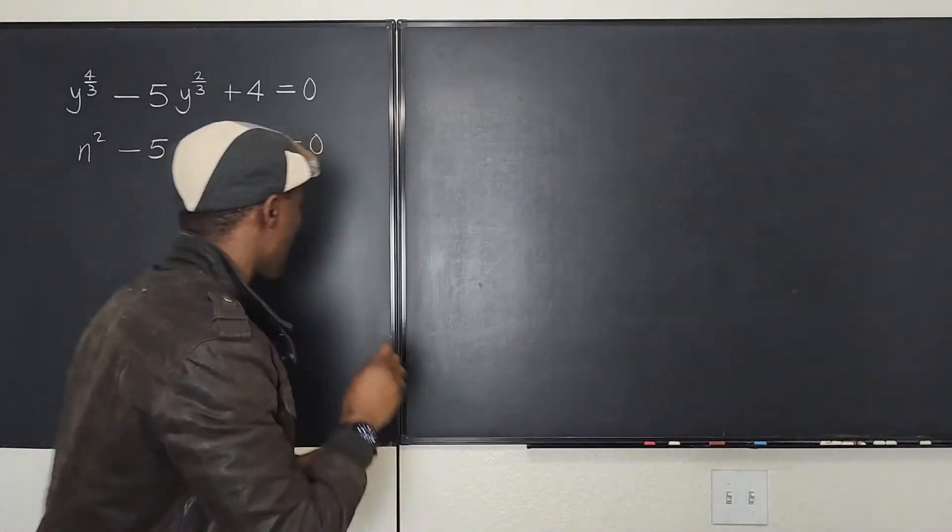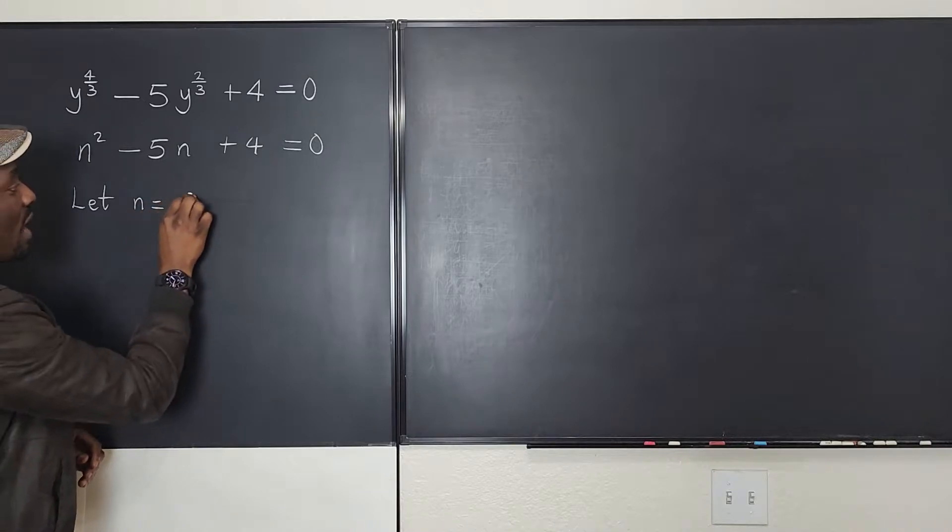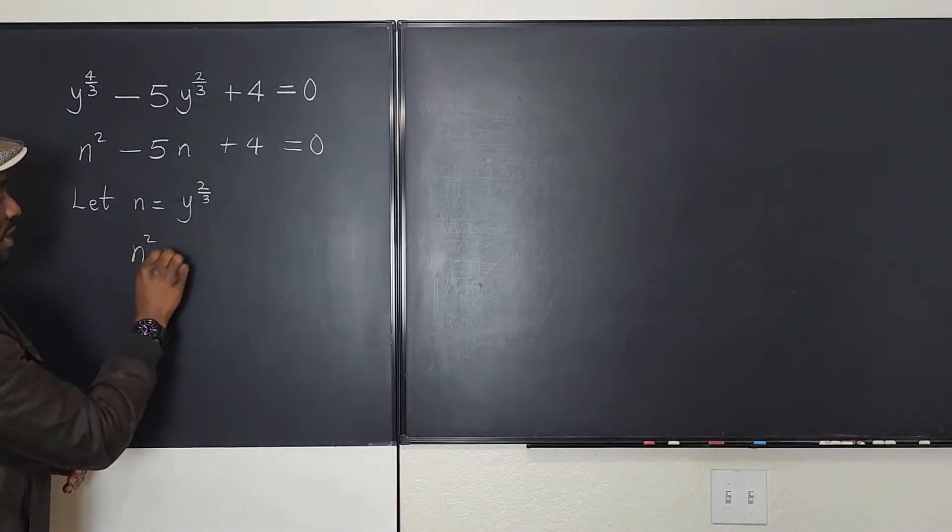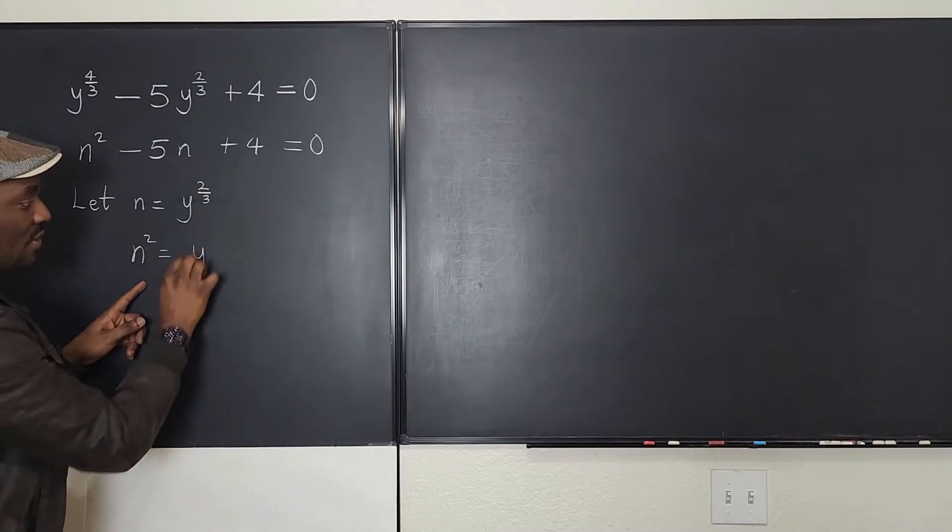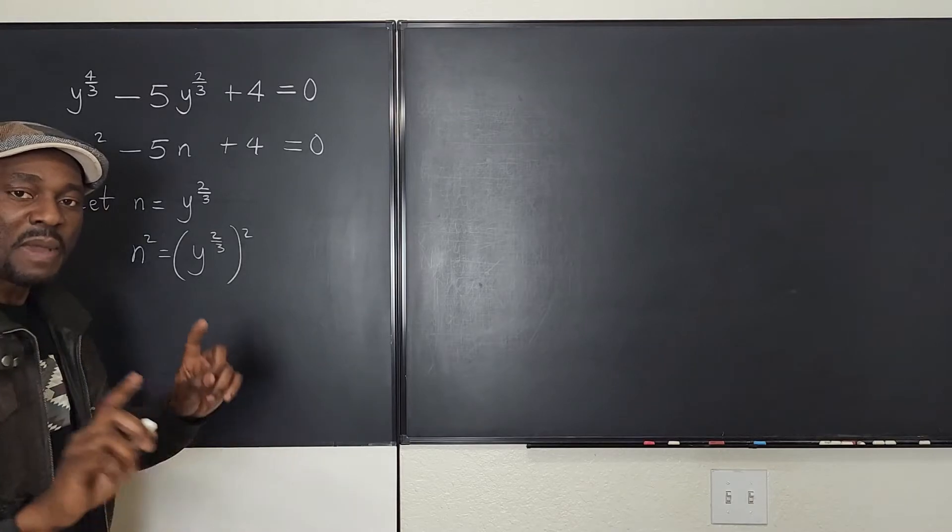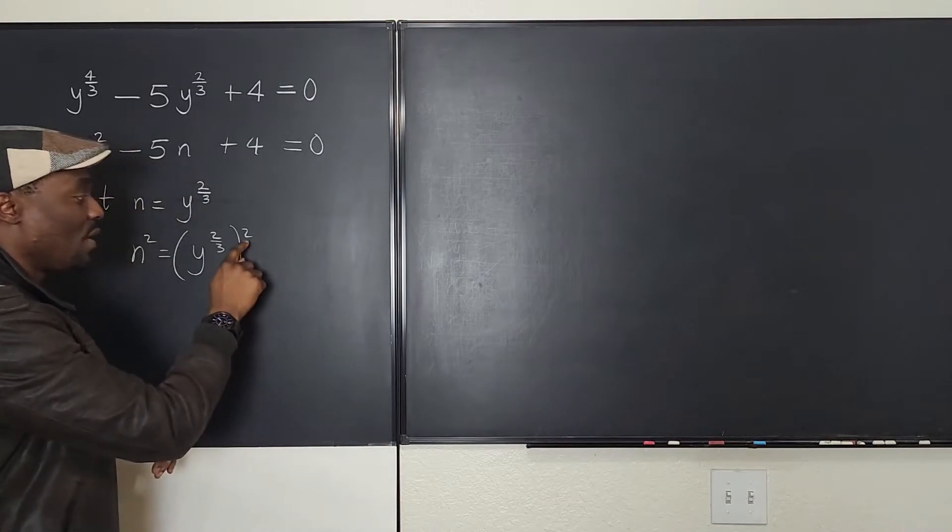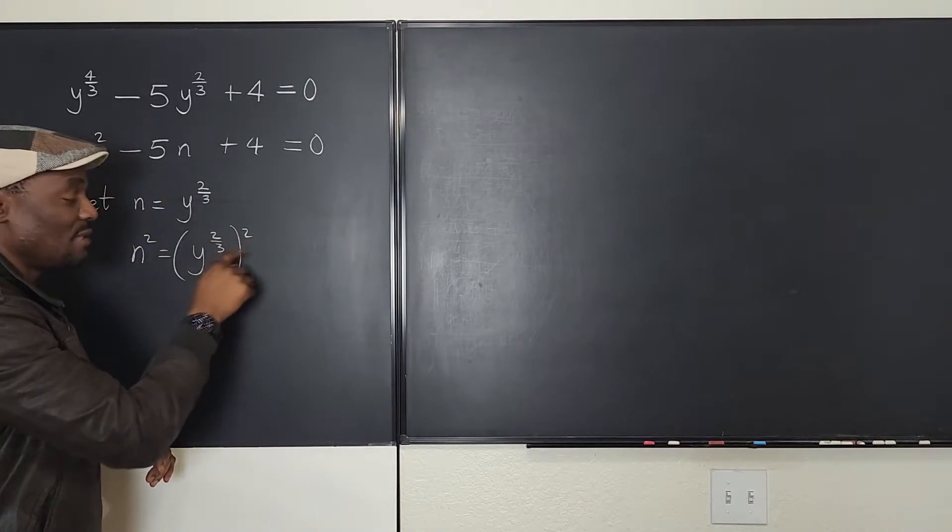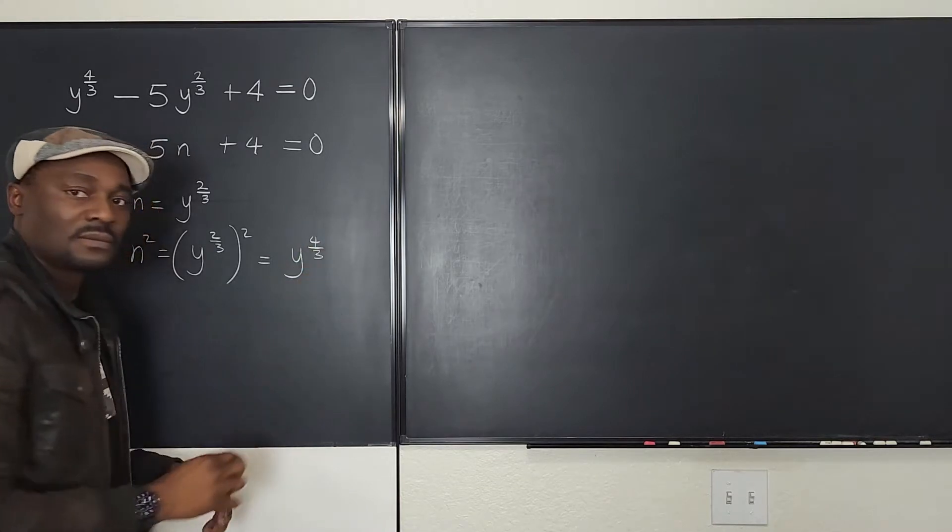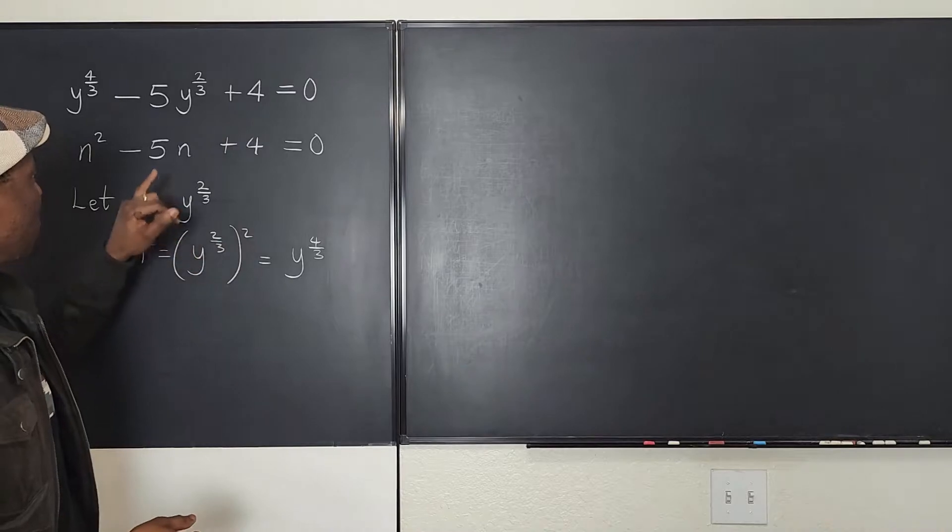Let's say let n be equal to y to the 2 over 3. What will n squared be? Well, n squared is going to be y to the two-thirds raised to power 2. And if you remember the laws of exponents, when an exponent is raised to another power, what you do is you just multiply the exponents. So this is going to be y to the four-thirds. So this is the square of this.